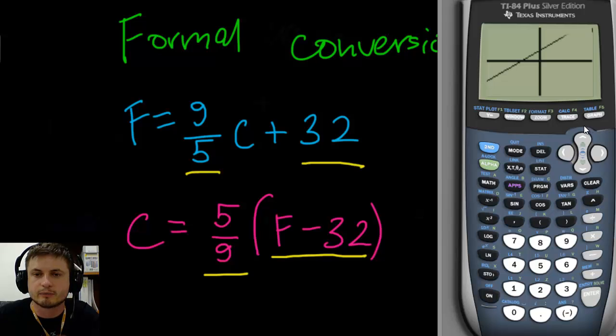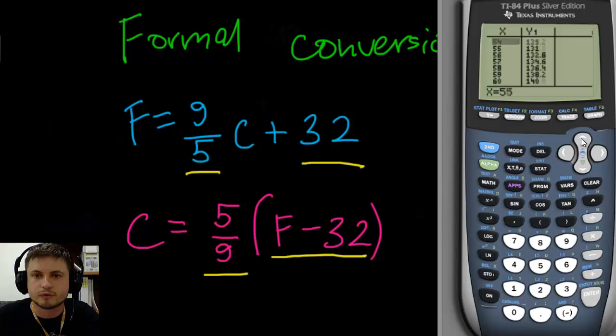And that's our line that represents the temperature conversion from Celsius to Fahrenheit. You can also go into your table, which is second graph, and find the values for Celsius to Fahrenheit. So for example, 40 Celsius is 104 Fahrenheit or 30 Celsius is approximately 86 Fahrenheit. Now let's do the opposite.